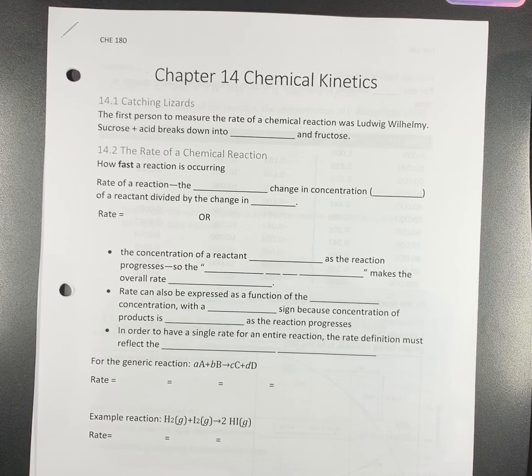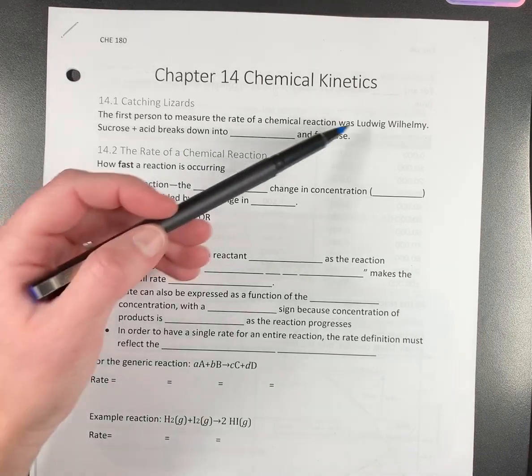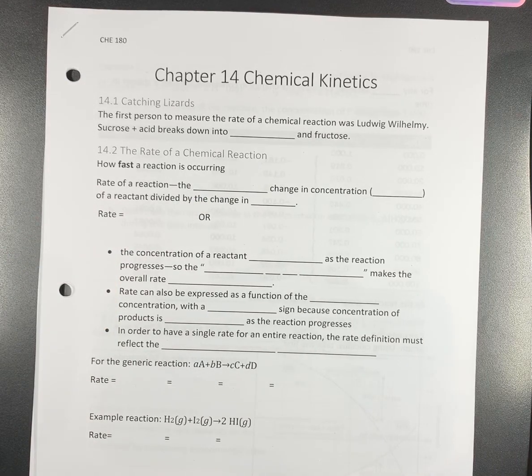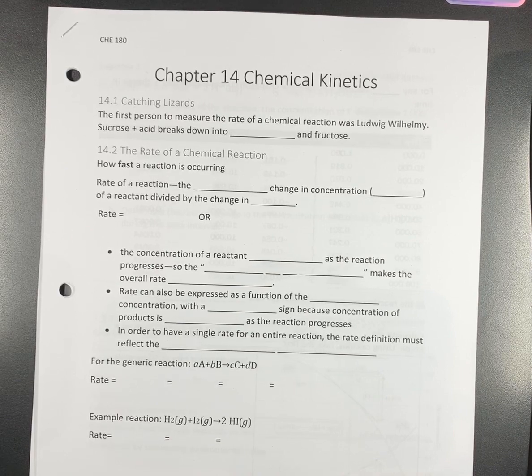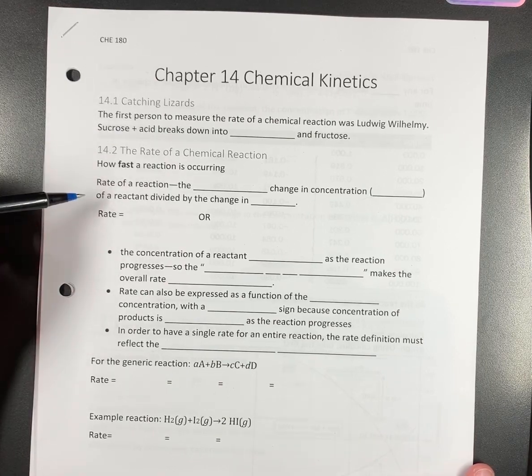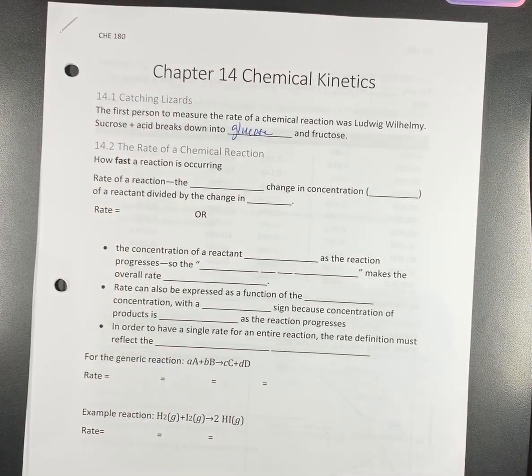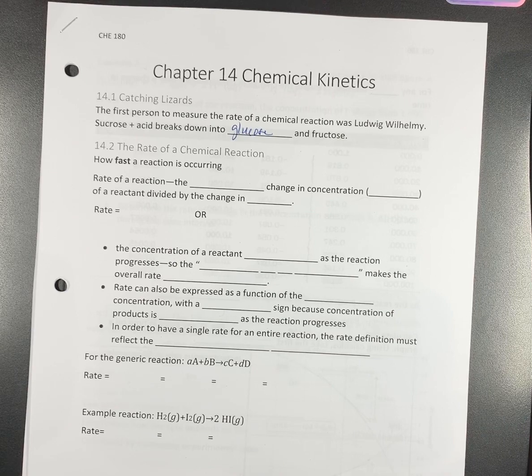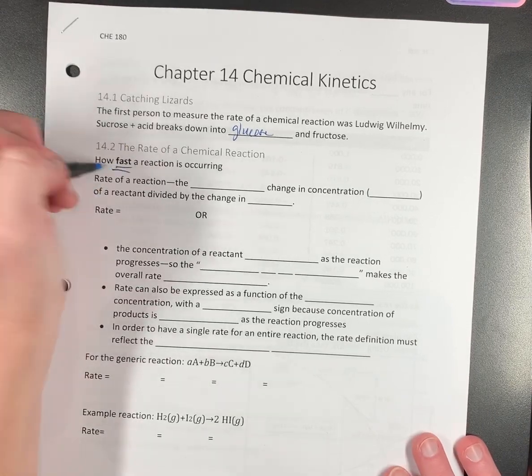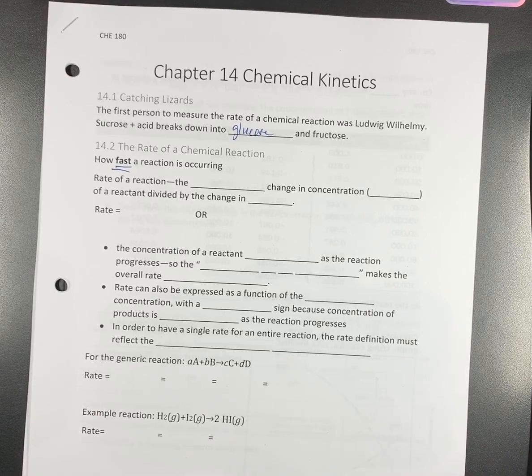So the first person to actually measure rates of reactions was this guy, he's German, he's not on the test. The first guy that determined if you take sucrose and add an acid to it, it's going to break down into glucose and fructose - you don't care about that. But what is the rate of a chemical reaction? It is how fast a reaction is occurring.